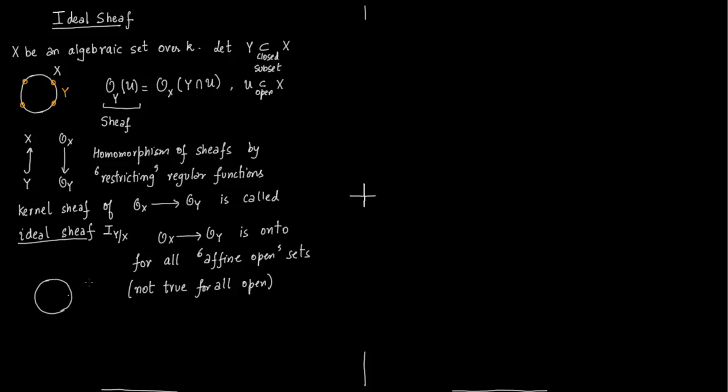Just to recall what affine open is. You have this algebraic set X and you have points taken out, a finite number of points taken out, because of some polynomial cutting this set. So this is the affine open set we get from X by taking out two finite points.